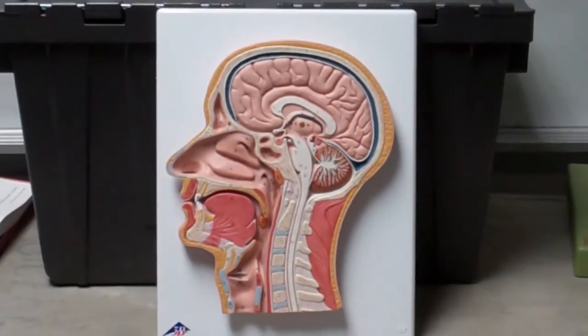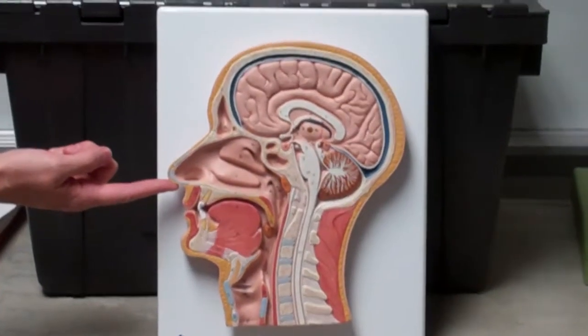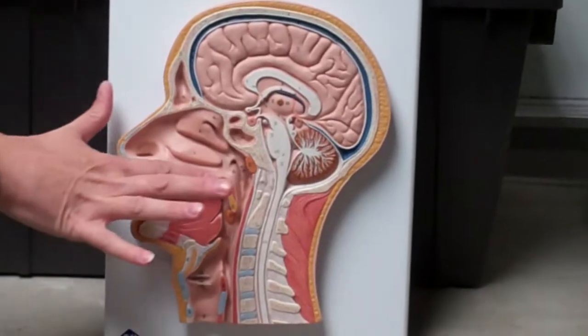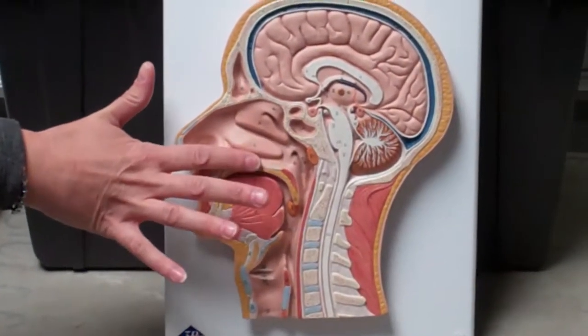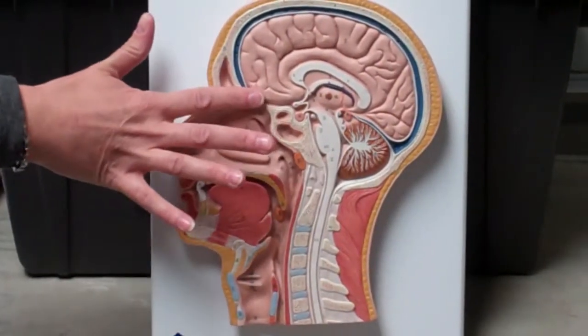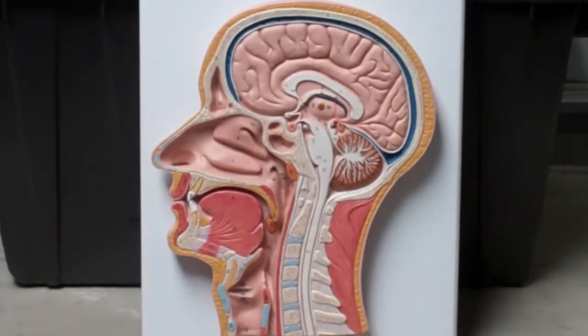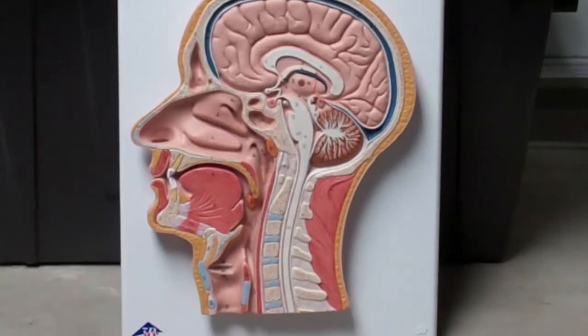we have the external nares as our anterior border, and we're going to have the inferior border being our cribriform plate—or sorry, not a cribriform plate—our hard and soft palate, and our superior border is going to be our cribriform plate of the ethmoid bone, and the internal nares is going to be our posterior.